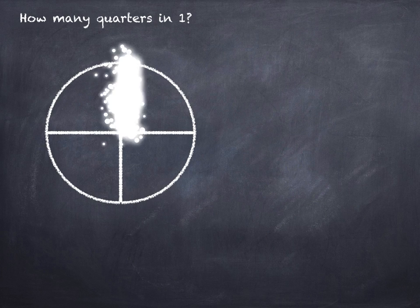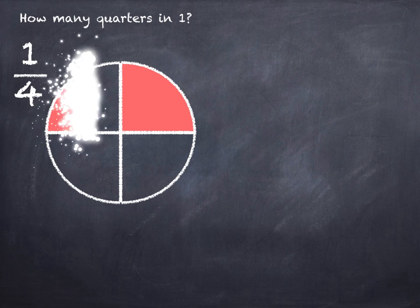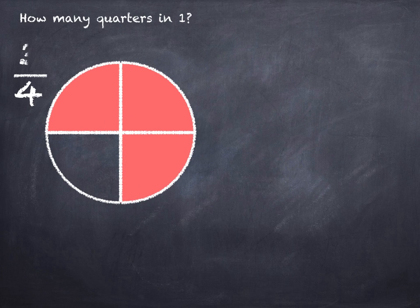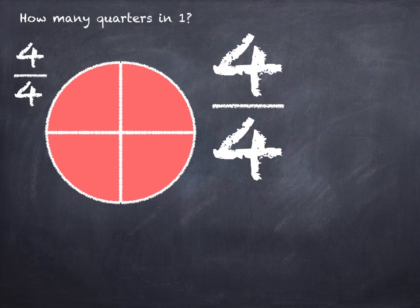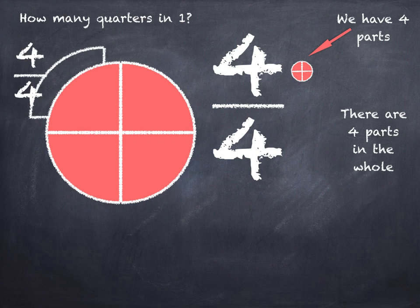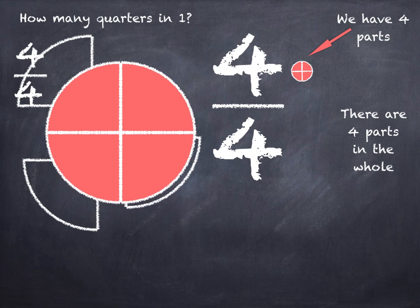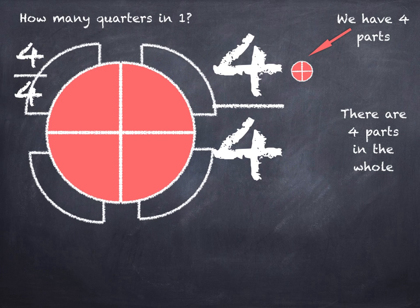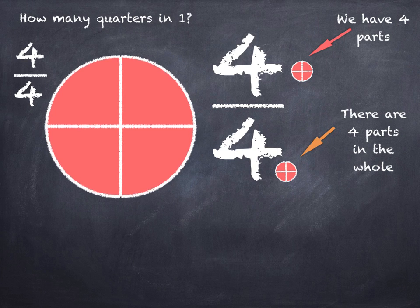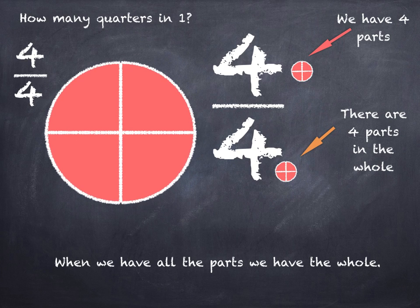How many quarters in one? One quarter. Two quarters. Three quarters. Four quarters. Four out of four — four quarters. The top number of the fraction tells us that we have four parts, and the bottom number of the fraction tells us there are four parts in the whole. When we have all the parts we have the whole. When we have all the parts we have one.